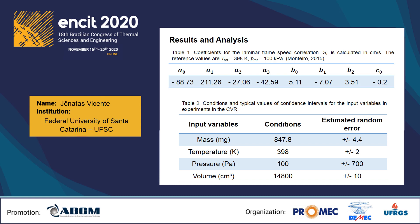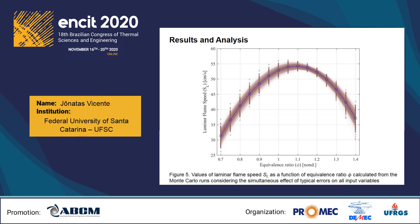These conditions and estimated errors are presented in a table. For the simulation, convergence of the Monte Carlo method was assumed after 10,000 samples. The figure presents the spread of the values of laminar flame speed calculated from the Monte Carlo runs considering the simultaneous effect of typical errors on all input variables. The results indicate that the effect of measurement errors increases toward the leaner and richer equivalence ratios, reaching a confidence interval of ±3.5% at equivalence ratio 0.7 and ±3.6% at 1.4.